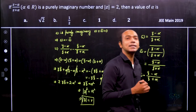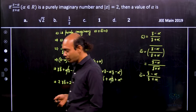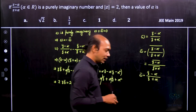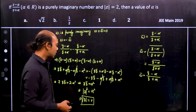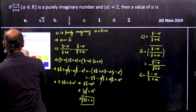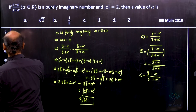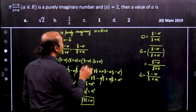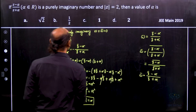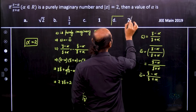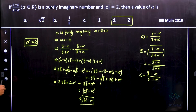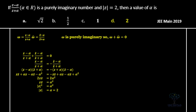The modulus of z is the distance of the complex number from the origin in the Argand plane, and distance cannot be negative, so |z| = α. In this particular problem it is given that |z| = 2, therefore alpha equals 2. Hence, option D is the correct choice. Hope you understood the problem — you can copy the digital solution shown. Thank you.